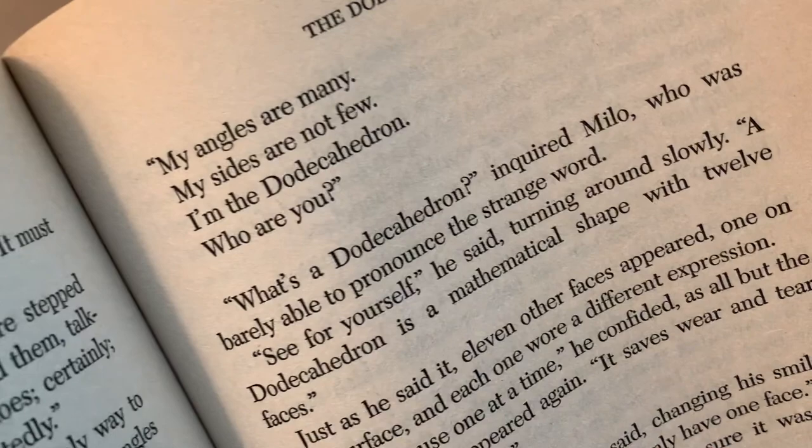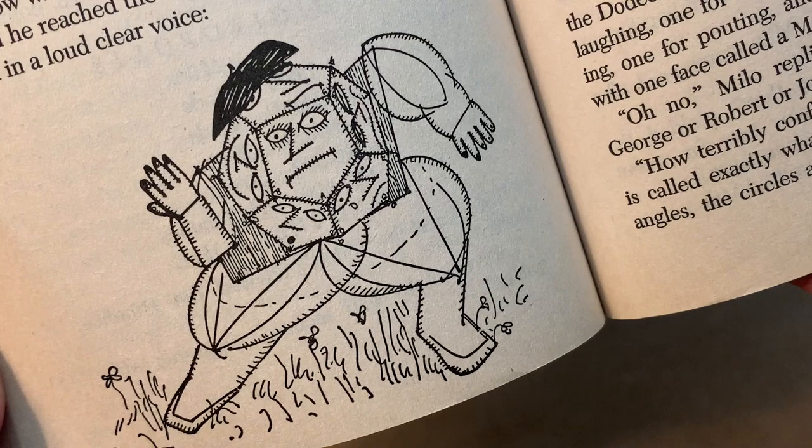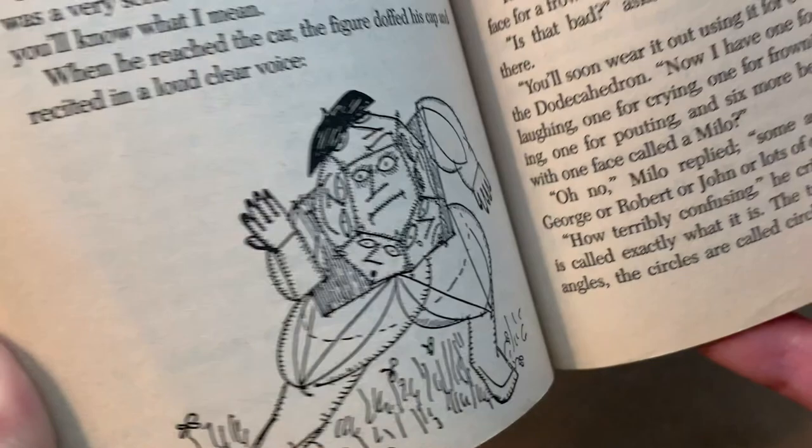My ankles are many, my sides are not few. I'm the dodecahedron, who are you? Introducing himself here is the marvelous mathy character with the super long name who leads Milo and the humbug and Tock into Digitopolis. Now, the wonderful thing about the dodecahedron is that he doesn't just exist in the lands beyond and in this book. A dodecahedron is an actual thing, a geometric shape just like a square or a circle or a cube is a geometrical shape.